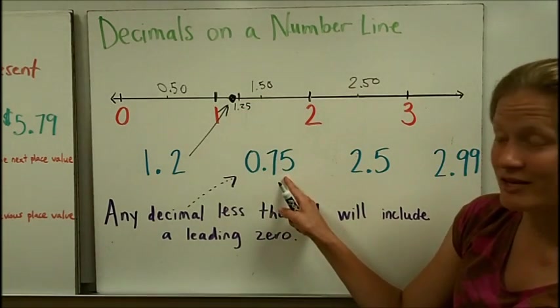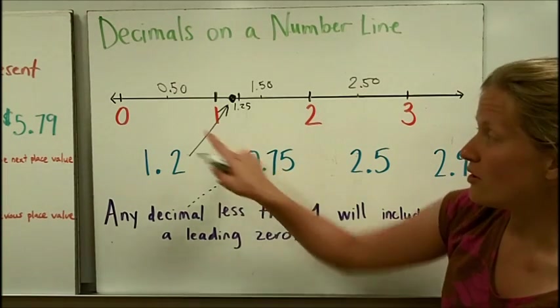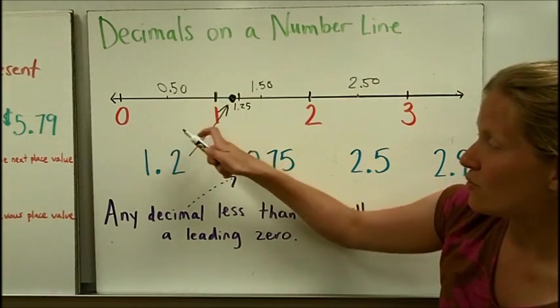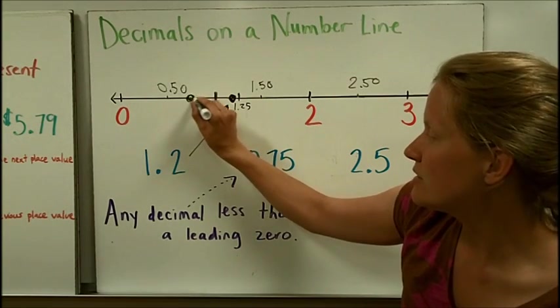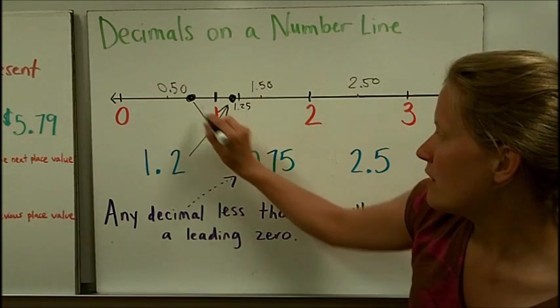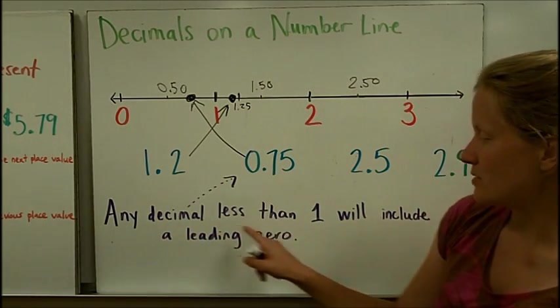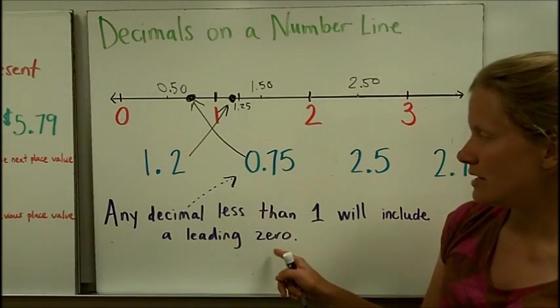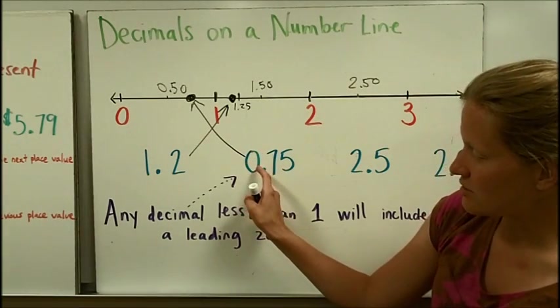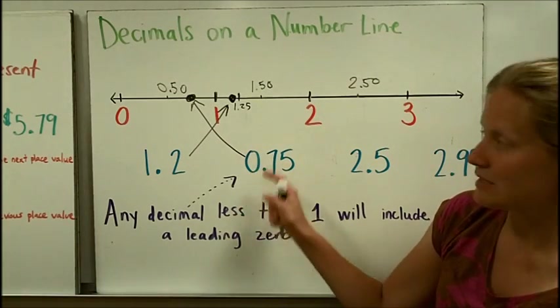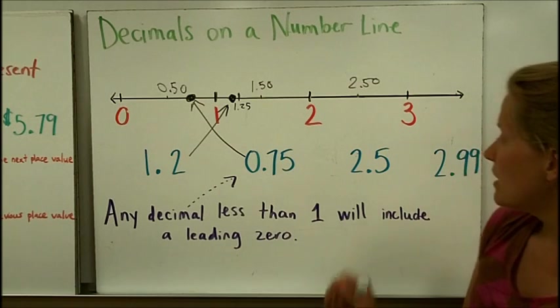Seventy-five hundredths. Your brain should think about money, that's seventy-five cents. And seventy-five cents falls halfway between fifty cents and one dollar. So seventy-five cents, or seventy-five hundredths, is going to go there. And notice, we have a special note about this one. Any decimal less than one will include a leading zero. So if you have a zero in the ones place, you know that that means that that number is less than one. It falls on the number line between zero and one.